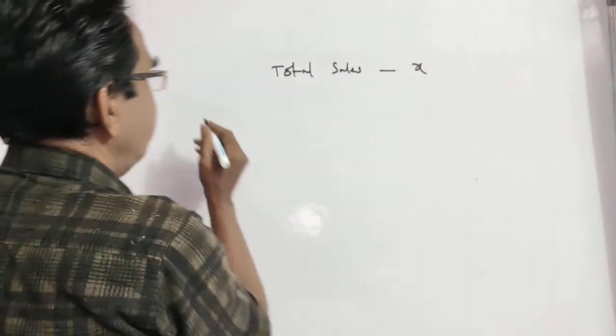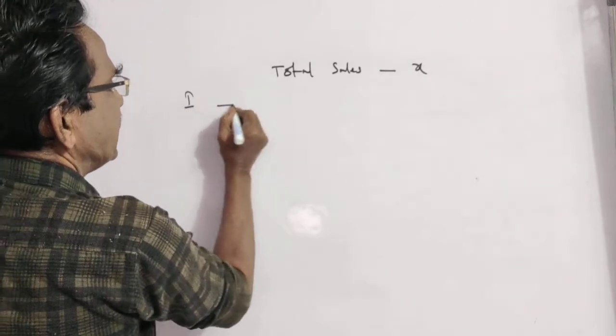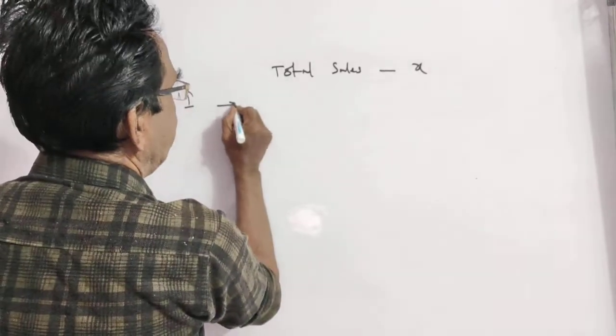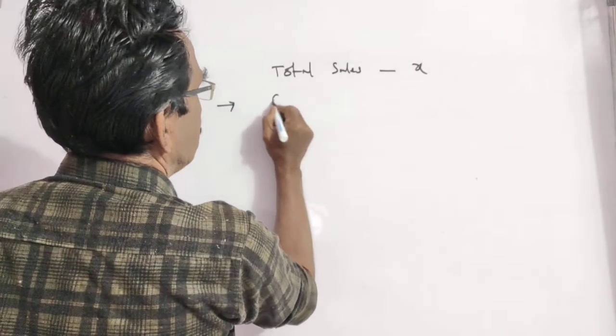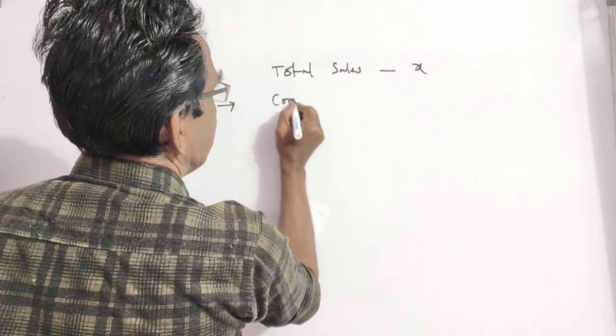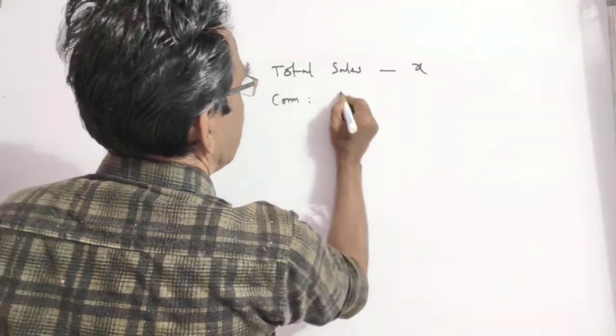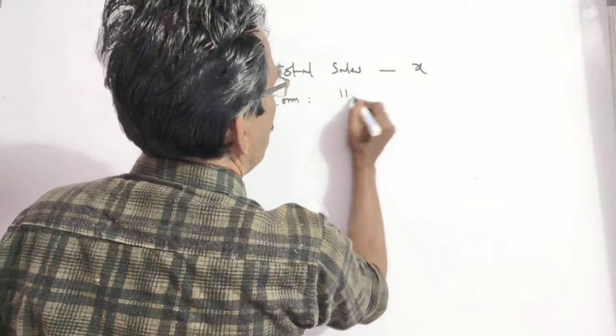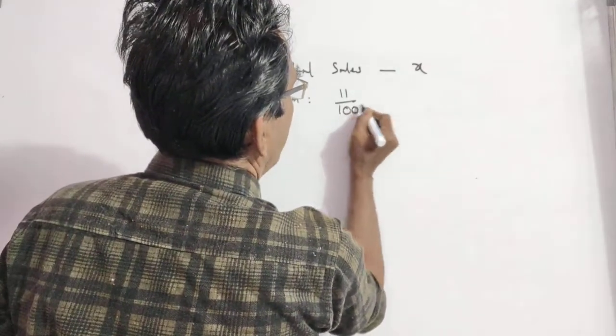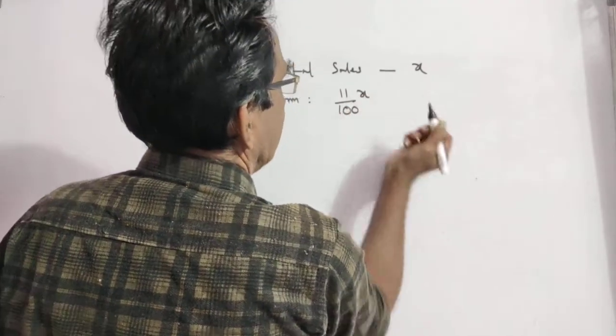In the first case, he gets 11% commission on all sales. So the first case commission is equal to 11% of X.